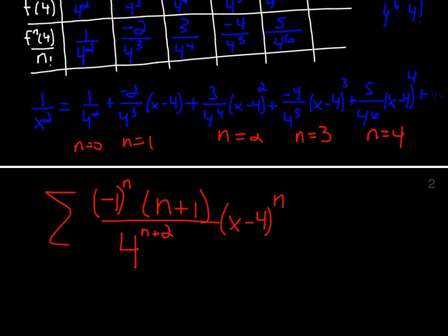And this summation then starts at 0 and goes to infinity. That's our f of x. That's the Taylor series. That's our answer, the Taylor series for f of x. This will be equal to 1 over x squared centered at x equals 4, but not valid for all values of x.